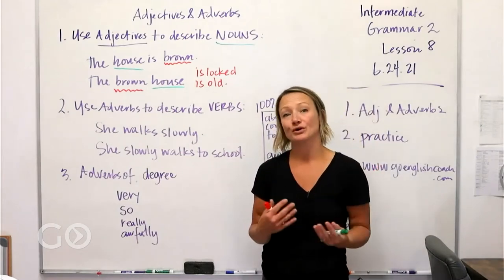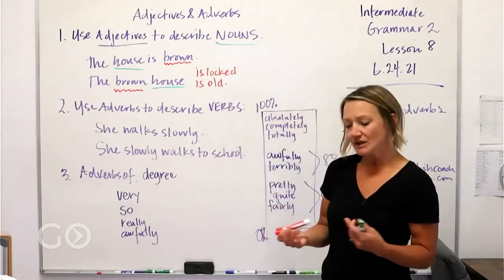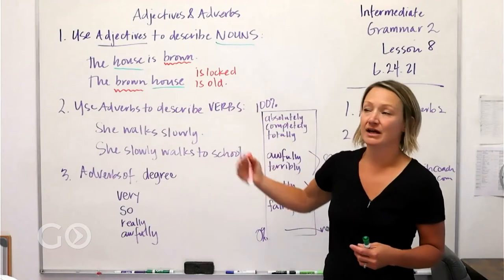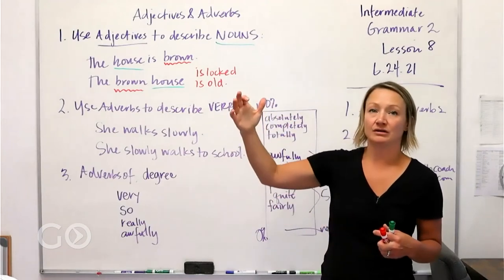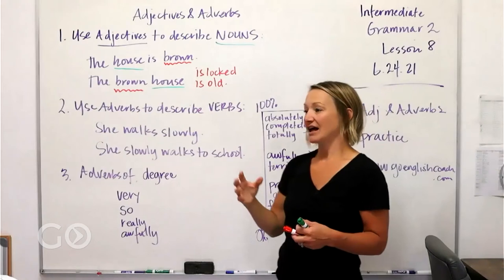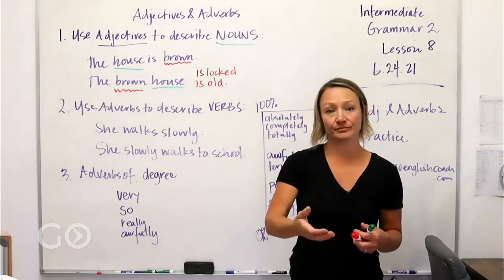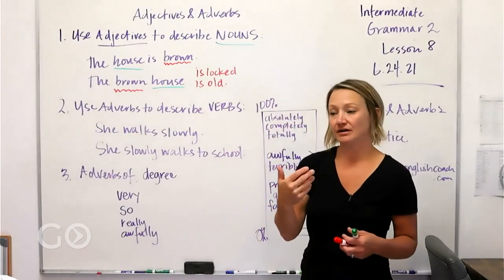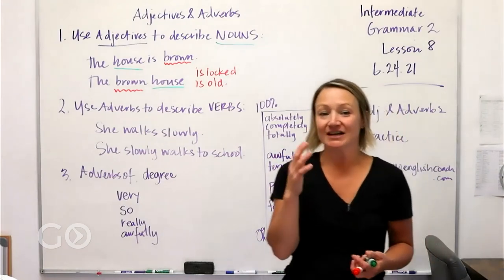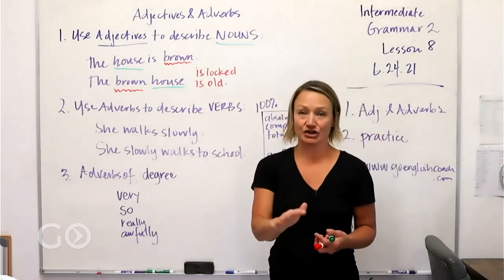The house is brown, the brown house is locked. In our class yesterday we talked about the order of adjectives. So if you have three adjectives for house—big green fancy house—there is an order to like a rule about the order of those. We talked about that in our class, so if you want to learn more about that, for sure go check out the lessons from yesterday.